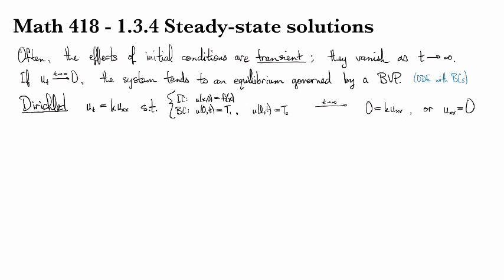This is a simple enough equation that we can solve it just by integrating. We integrate it once and we get ux equals some constant. Then we integrate it again and we get that u is going to be some constant times x plus some other constant. We can actually work out what those constants are by using the boundary conditions.